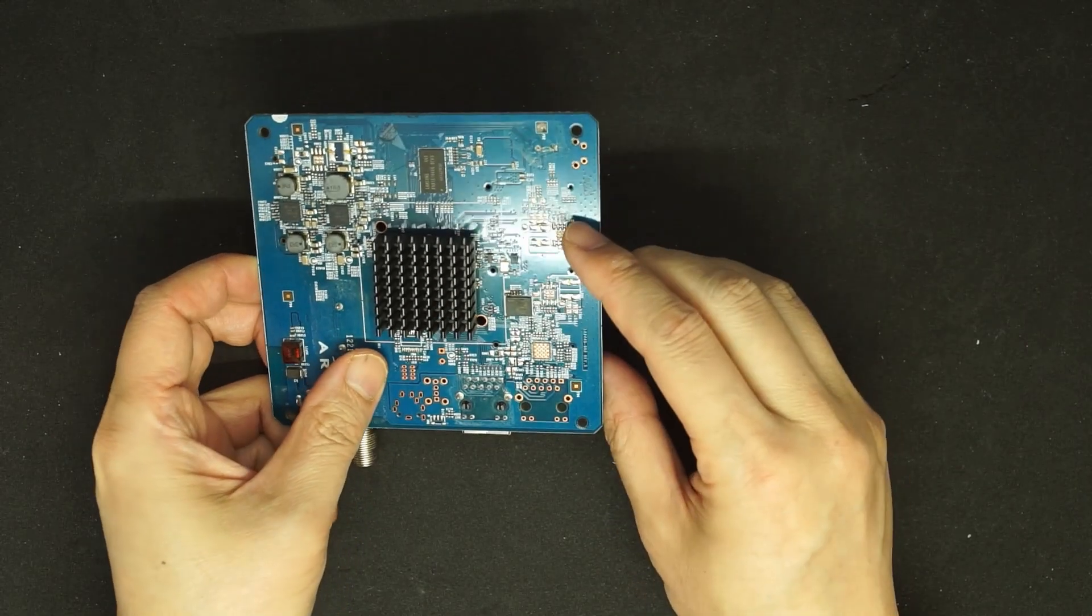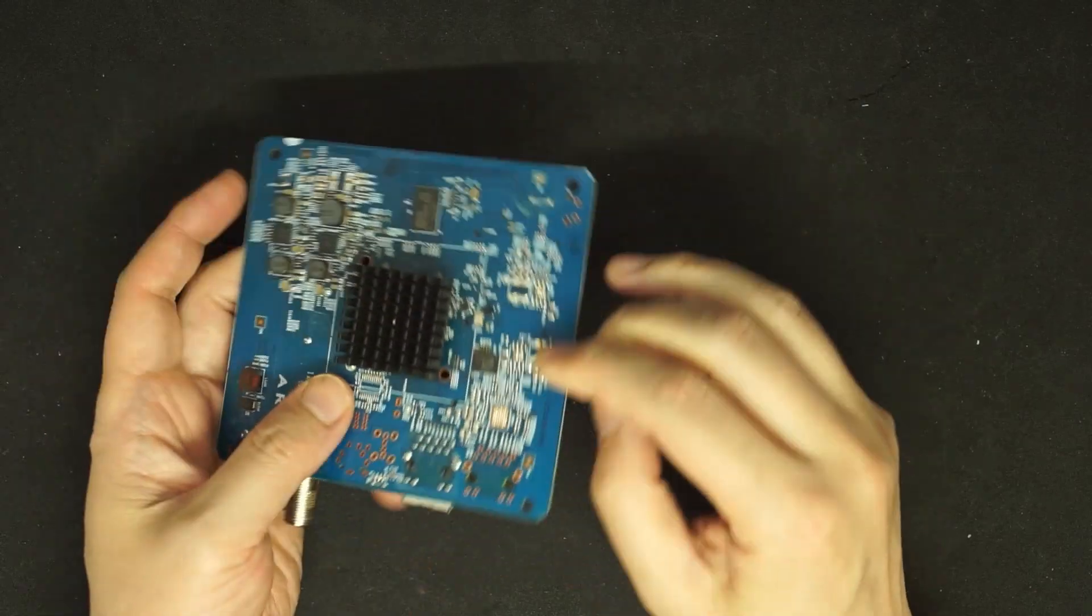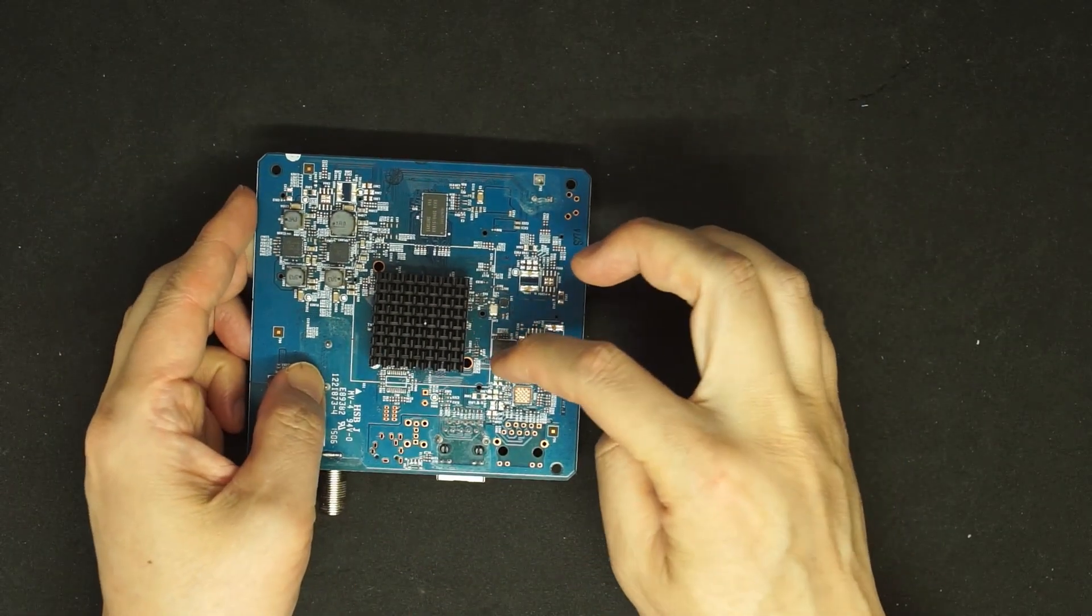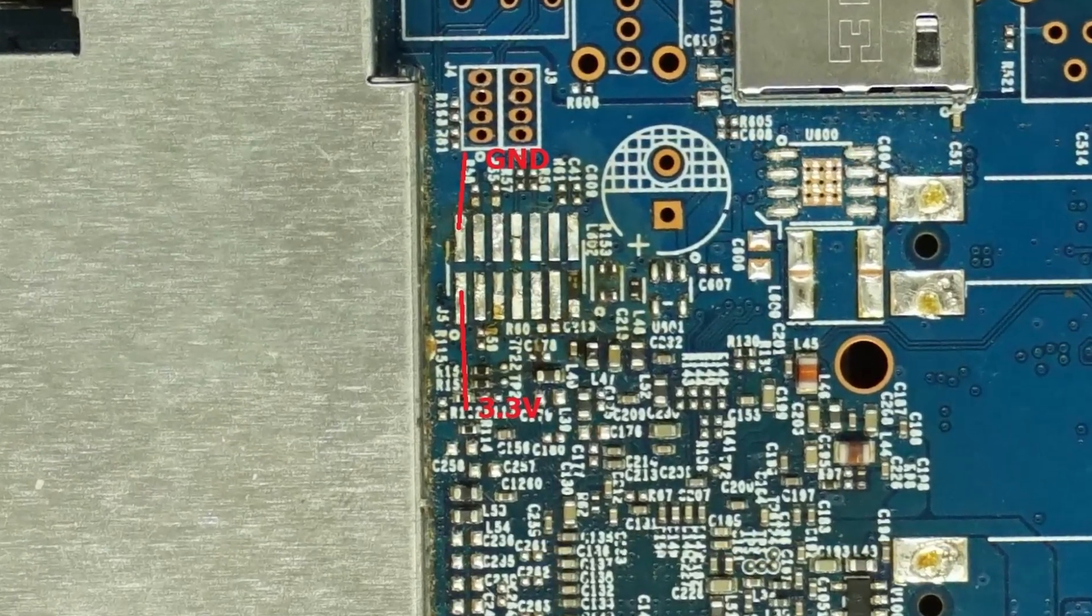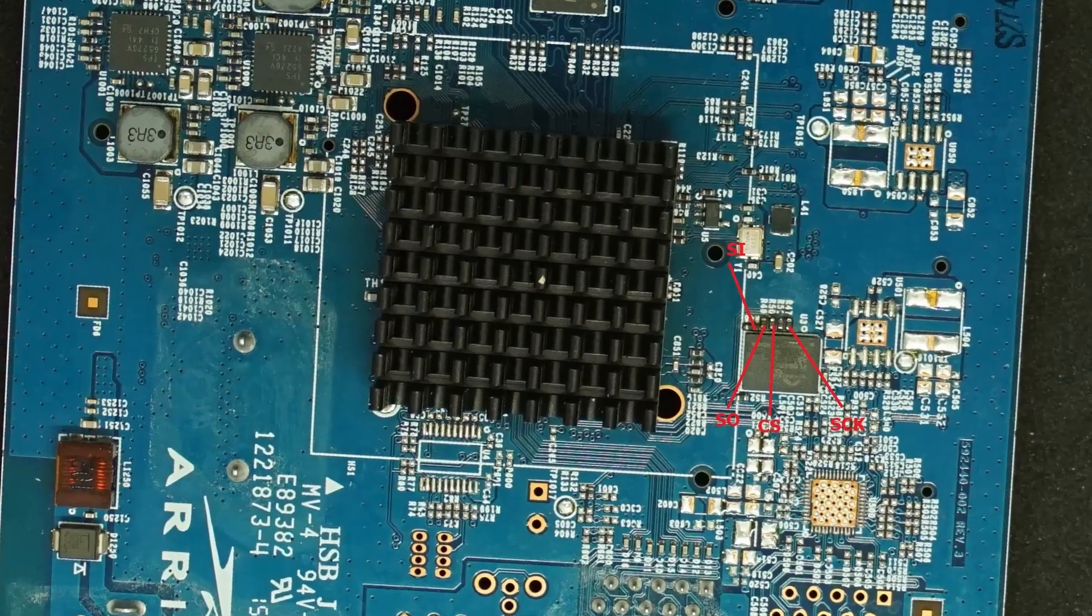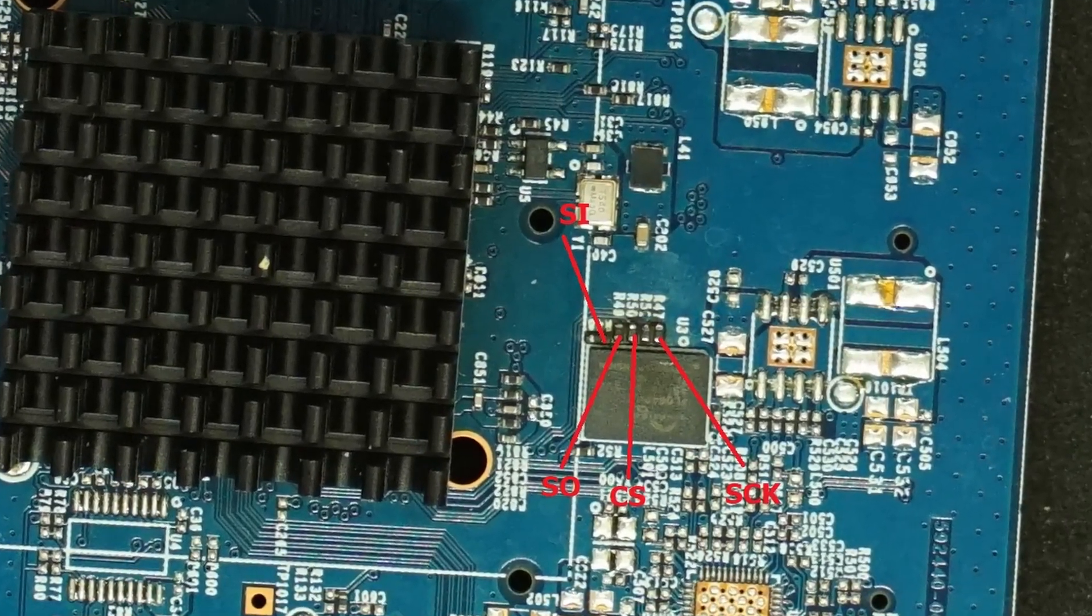We need to connect the power and I found the power connector on this side and the four signal pins on this side. Here is the ground and power supply. Here are SI, SO, CS, SCK signal pins.